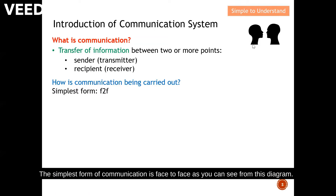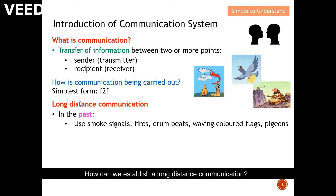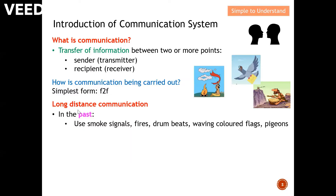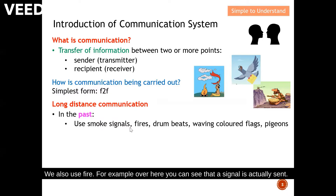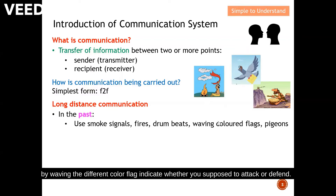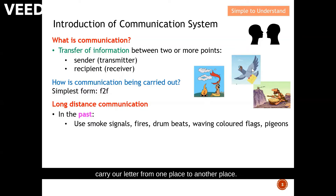How is communication carried out? The simplest form of communication is face to face. But how can we establish long-distance communication? In the past, we used smoke signals, fire signals, drum beats, waving different colored flags to indicate whether to attack or defend, and pigeons to carry letters from one place to another. These are all forms that can establish communication over a long distance.